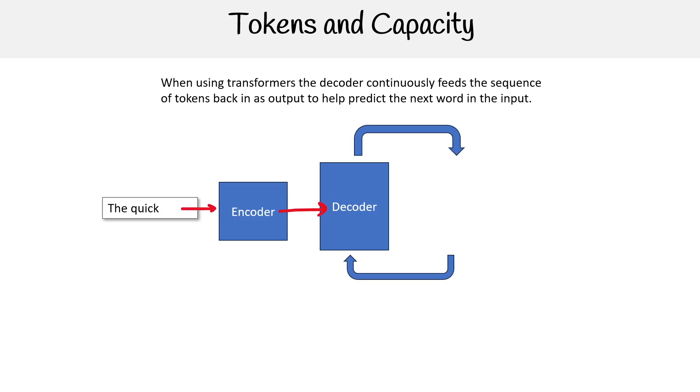So what are we talking about here? Here, imagine we have our input as 'the quick.' We feed it into the encoder, the encoder produces semantic context so that the decoder knows what to do with that text.